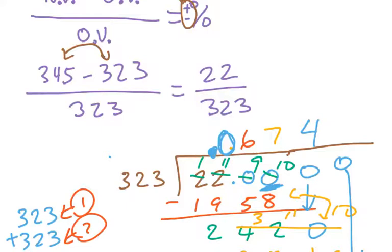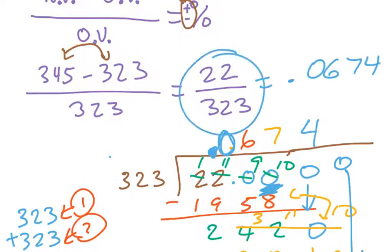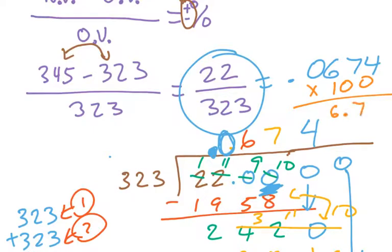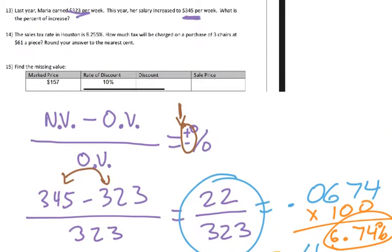We're not actually done — we have to multiply by 100 to convert to a percent. Moving the decimal two slots over gives us 6.74 percent. So it's roughly a 6.74 percent increase. And there is the answer.